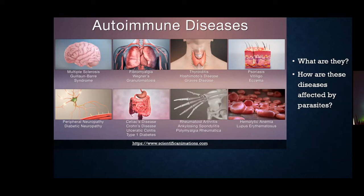Through the hygiene hypothesis, it's believed that as many countries became more industrialized and more sanitary with increased regulations, parasites have decreased in those industrialized countries and are more commonly found in underdeveloped countries. When a parasite is in the body, it most likely uses a Th2 immune response, which promotes and prevents autoimmunity and anti-inflammatory responses. Most autoimmune diseases follow a separate path — the Th1 or Th17 pathway — which promotes inflammation and the body attacking itself.